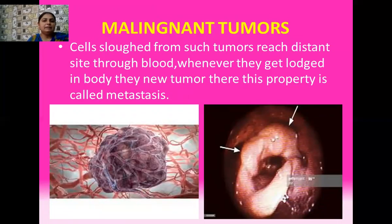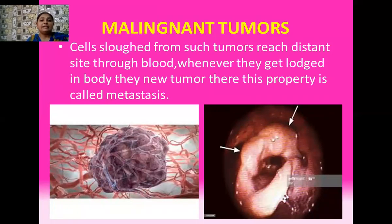One formal example of malignant tumor is the tumor found in the blood, which is known as blood cancer or leukemia. Cells from such tumors reach distant sites via the blood, and whenever they lodge in the body, they introduce a new tumor. This feared property of cancerous cells is known as metastasis.